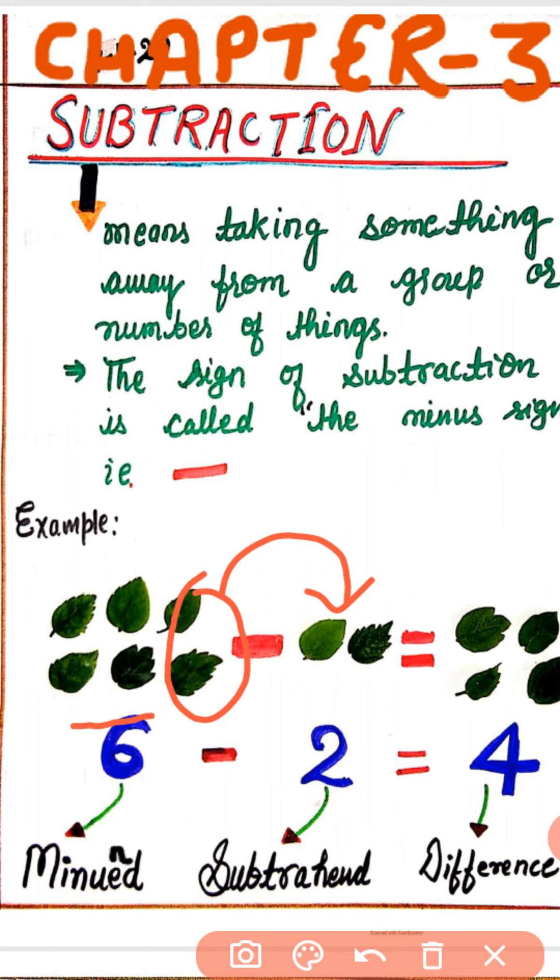Now after taking 2 leaves, 4 leaves will be left. We can see when we subtract 2 from 6, we will get the difference of 4.